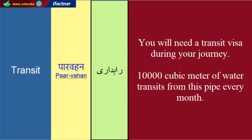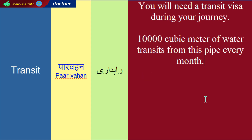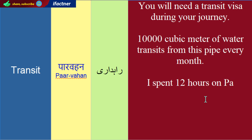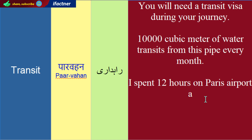और उसी sense में, transit का एक और meaning भी होता है. पुराने जमाने में जो surveyors होते थे, जो ज़मीन वगैरह की पैमाइश करते थे, वो एक tool यूज करते थे horizontal angles बनाने के लिए — उसको भी transit कहा जाता था. अब हम एक और sentence बनाते हैं transit को use करते हुए: I spent 12 hours on Paris airport during my transit.